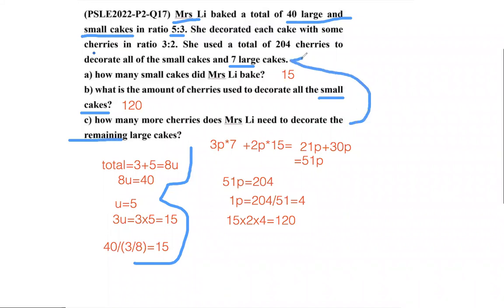It says she already used cherries for 7 cakes, so we take 40 minus 15 (the number of small cakes) minus 7. That gives us 18 cakes left.